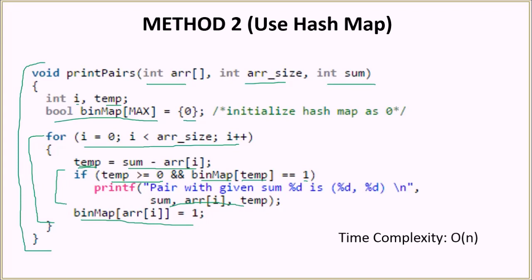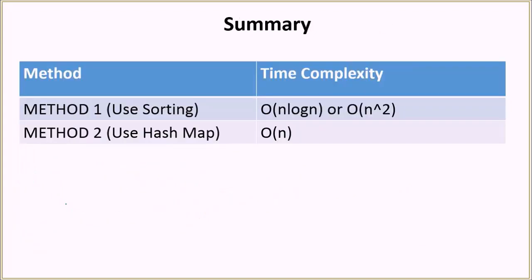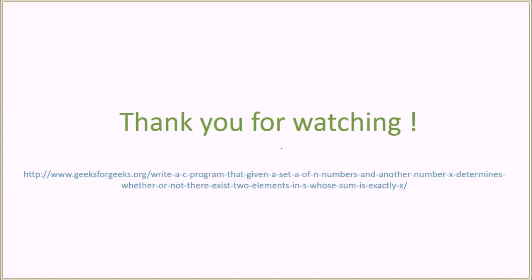The time complexity of the hash map solution is O(n) since we iterate over all elements only once. In total we discussed two methods: one using sorting, whose time complexity is O(n log n) or O(n²) depending on the algorithm; and one using a hash map, which requires knowing the range of numbers but runs in O(n). You can visit the link on the GeeksforGeeks website to find all the material discussed and run the code yourself. Thank you very much.